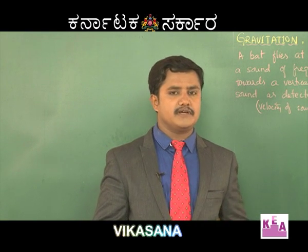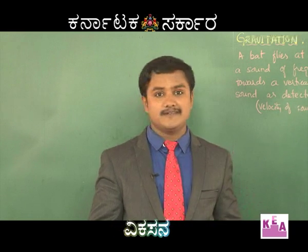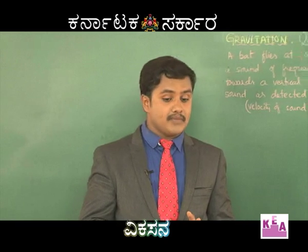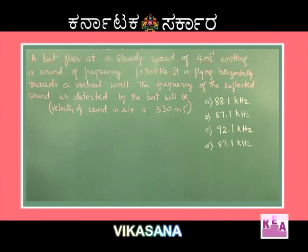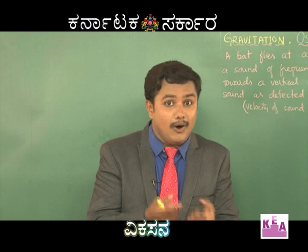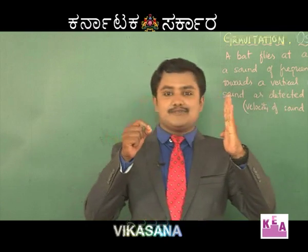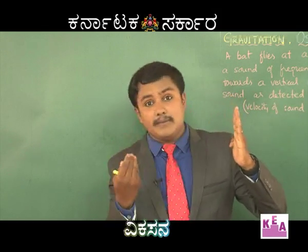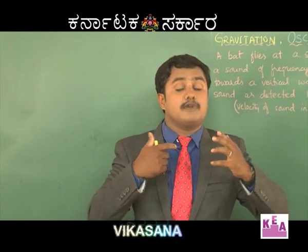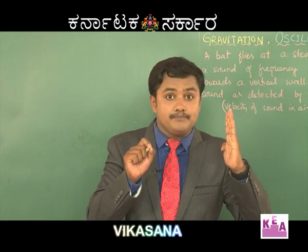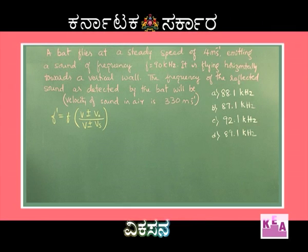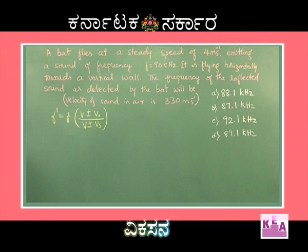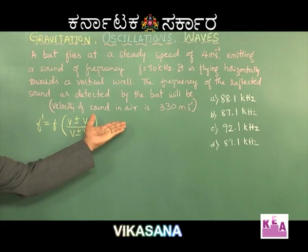This is a beautiful problem based on the Doppler effect, because we are supposed to find the frequency as observed by an observer. Here, who is the emitter? The emitter is the bat, and who is the observer? The observer is also the bat. The bat is flying towards a vertical wall, and the sound after getting reflected by the wall comes back and is received by the bat. The formula for apparent frequency is F' = F × (V ± V_O) / (V ± V_S).